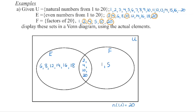We need 20 elements in the diagram. Going through the natural numbers one to 20, anything not already in a subset goes in the complement. We're missing three, seven, nine, eleven, thirteen, fifteen, seventeen, and nineteen — those eight odd non-factors go outside the circles. Now we have all natural numbers from one to 20 accounted for, giving 20 elements total.